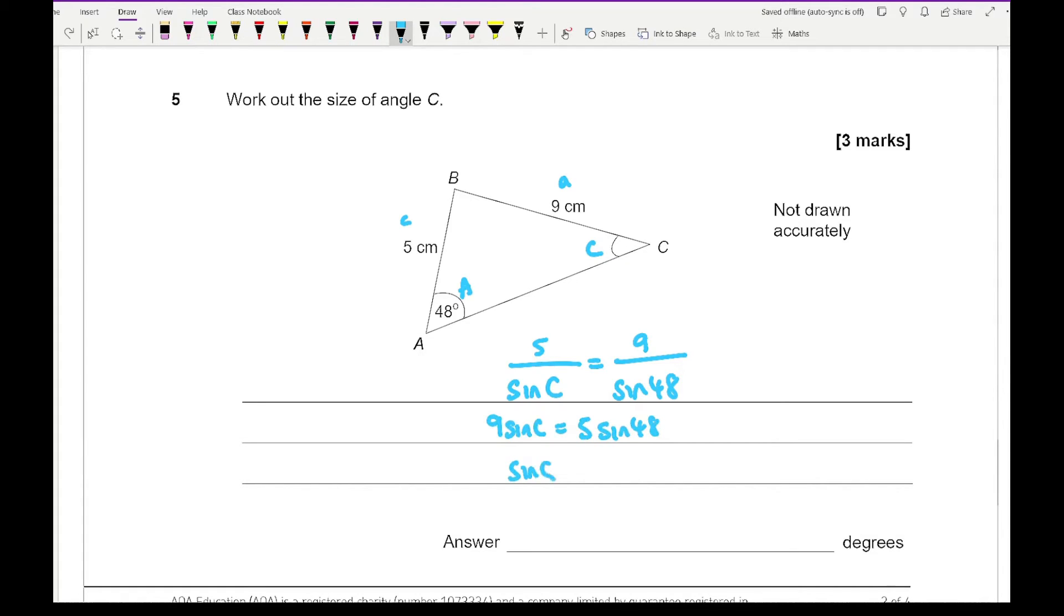Take the 9 over so I get sine c equals 5 sine 48 over 9 and then inverse sine that so inverse sine of 5 sine 48 over 9. And that equals angle c and what I should have for that is basically c equals 24.3845 blah blah blah. And so rounding that answer up we get 24.4 and that's to one decimal place.